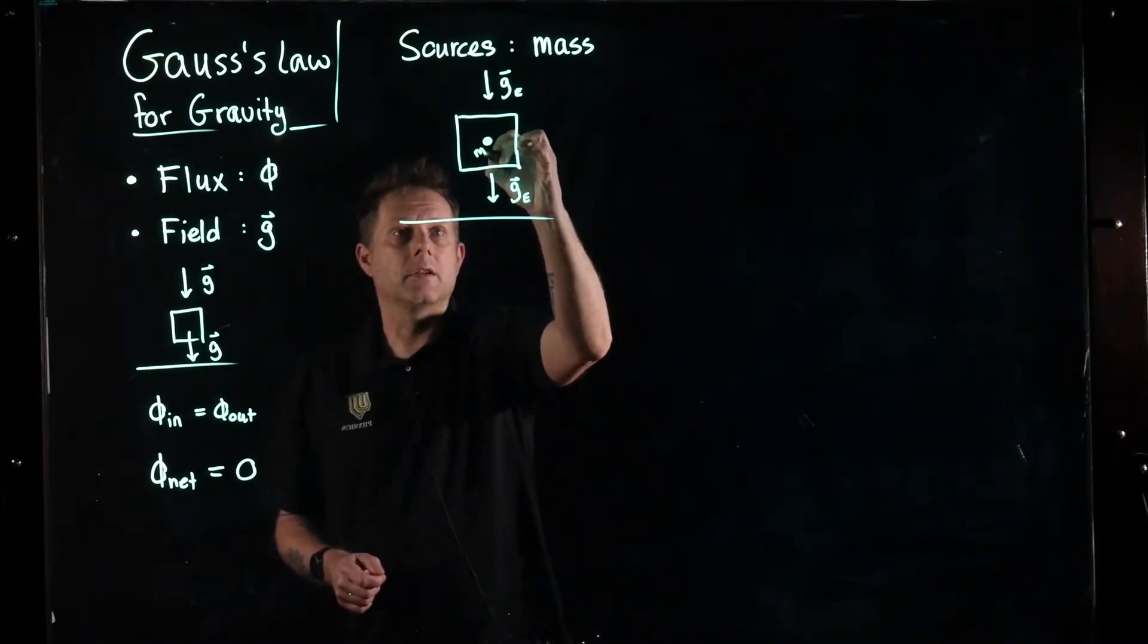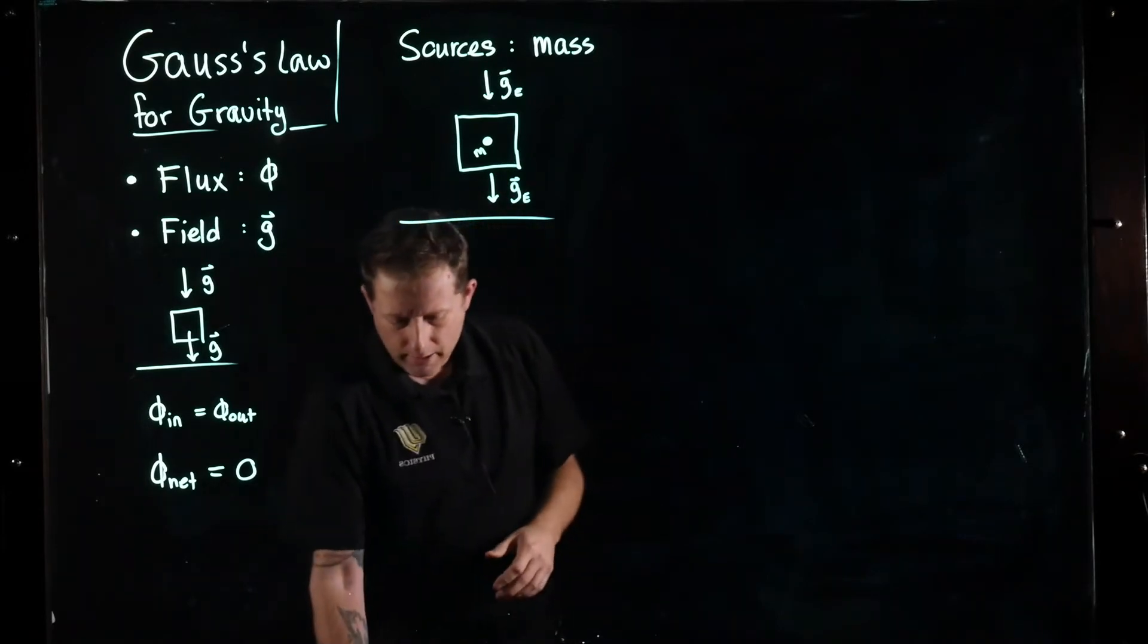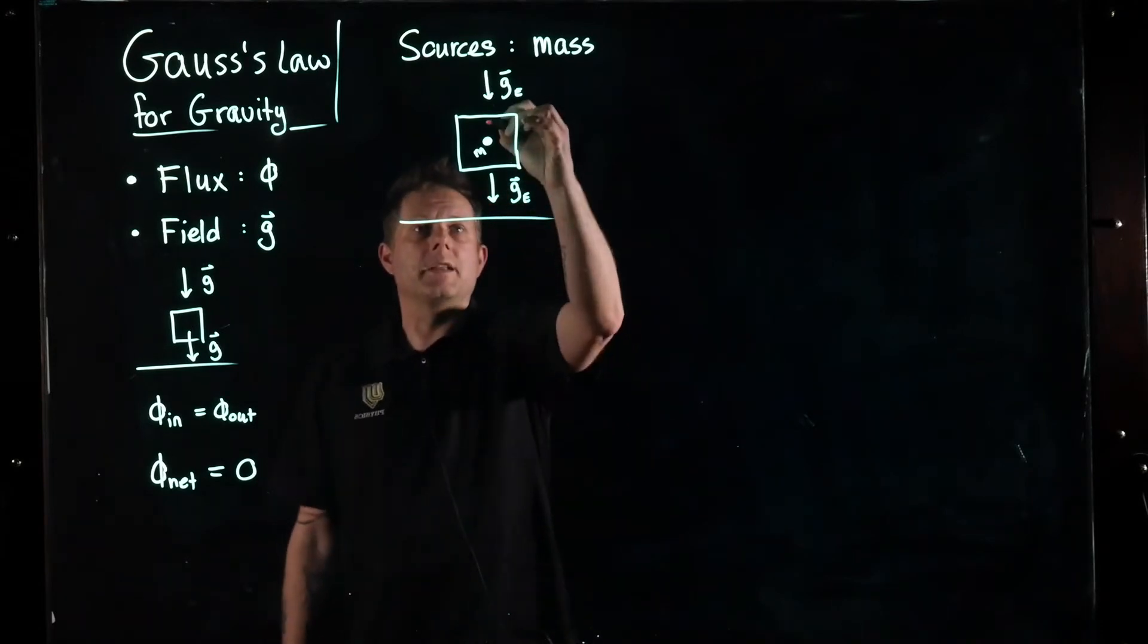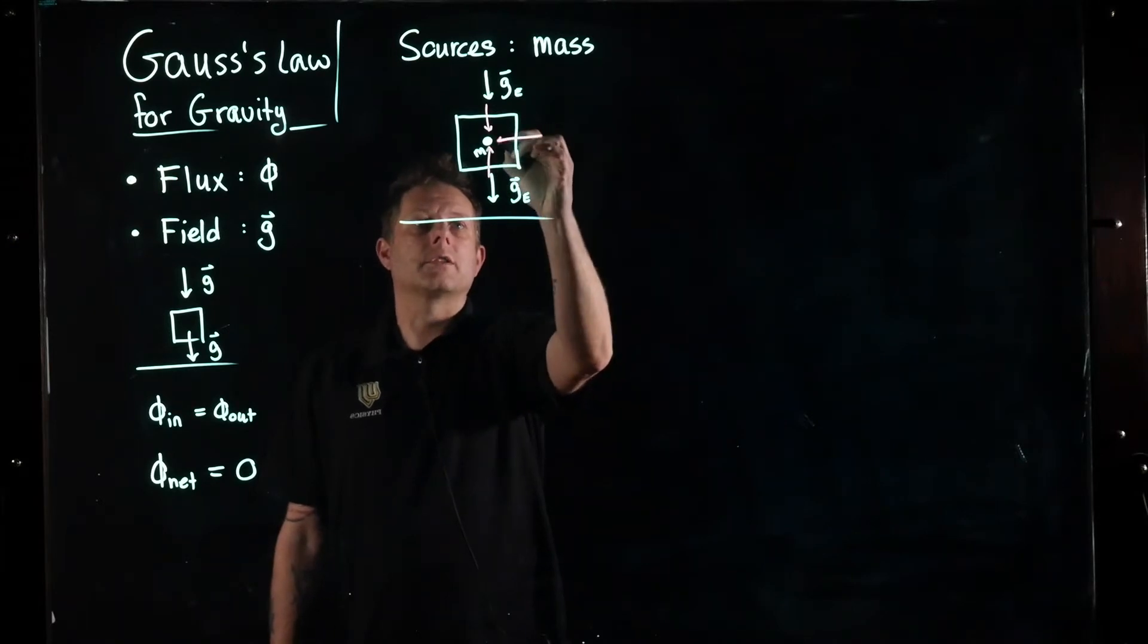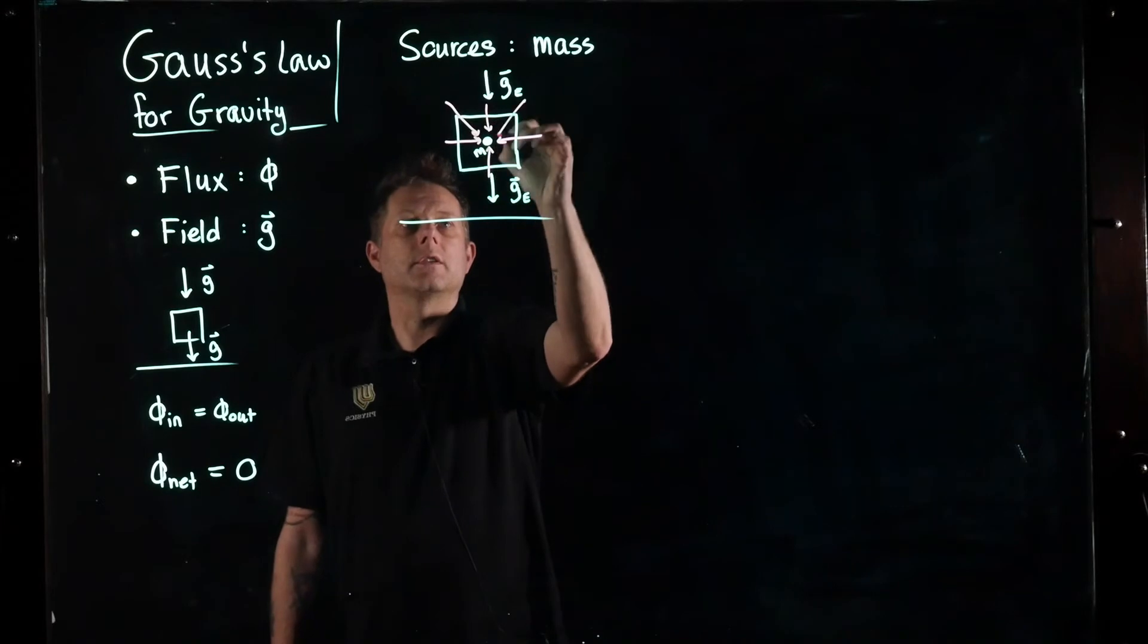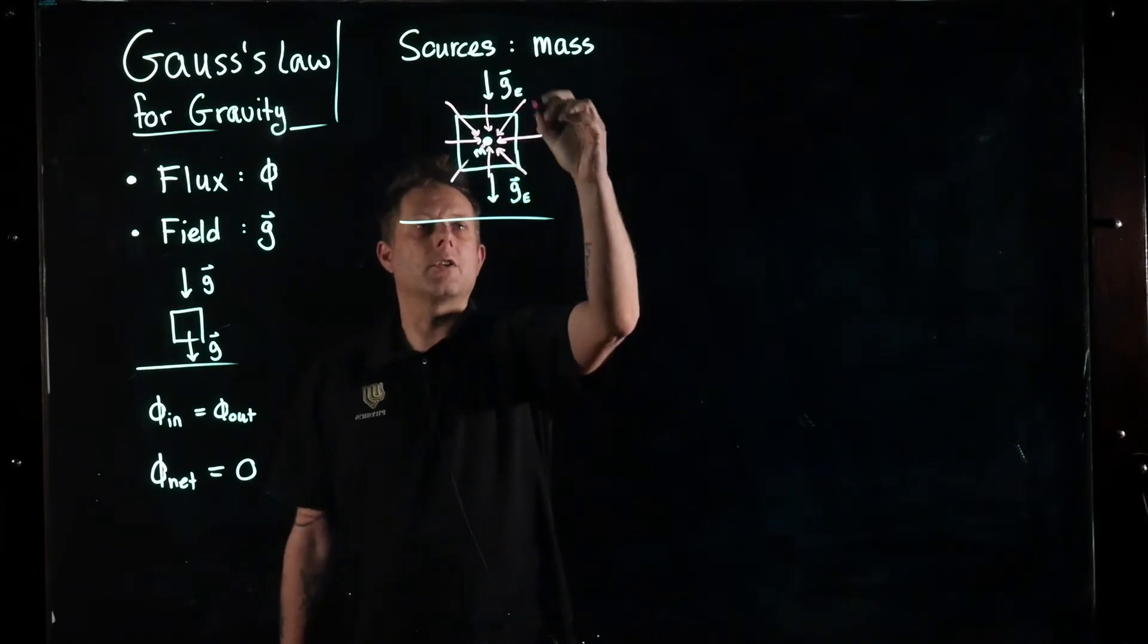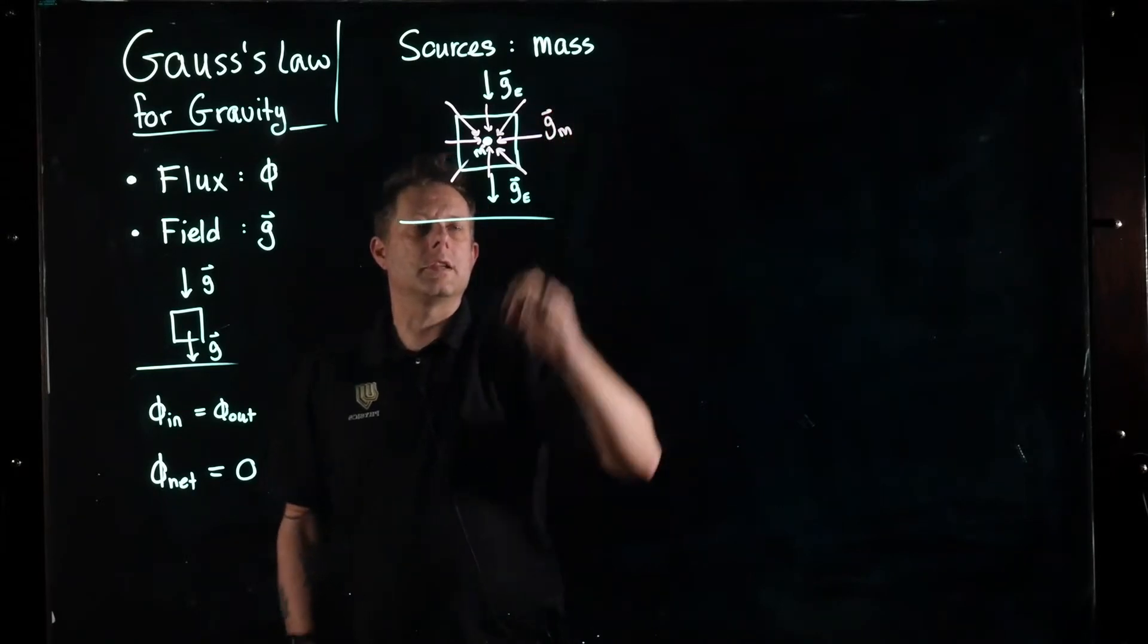That mass particle is going to create its own little field. If it's a sphere, that just means that no matter where we're looking, it's going to be pointing towards that little spherical object. We're going to call that field g subscript M.